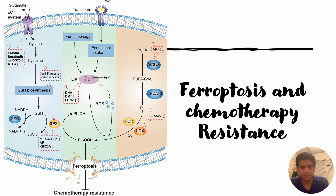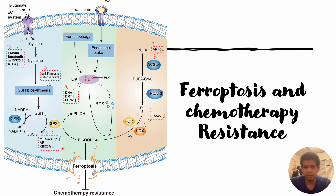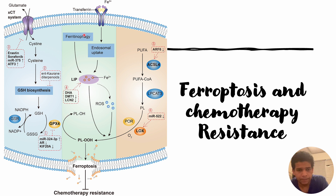All these inhibitors help in the inhibition of GPX4, which plays a role in preventing ferroptosis. So when GPX4 is inhibited, ferroptosis will occur.